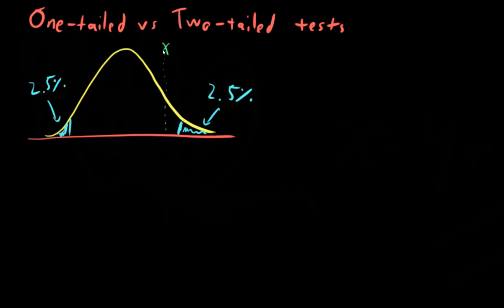Now, a one-tailed test does the opposite, or not opposite, but slightly different. A one-tailed test will give us the ability to detect whether or not this x is different than the mean if we're performing the same test, but only on one side.